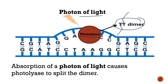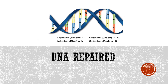This photolyase enzyme is very effective in repairing the TT dimers that are formed due to UV light. Due to the activity of the enzyme photolyase, the double-stranded DNA is now completely repaired and the thymine-thymine dimers are no longer seen in the double-stranded DNA.